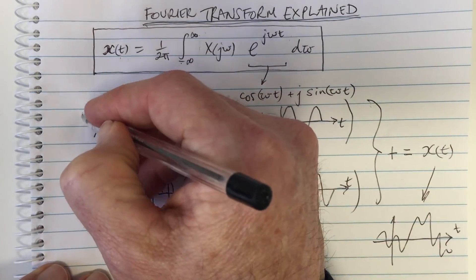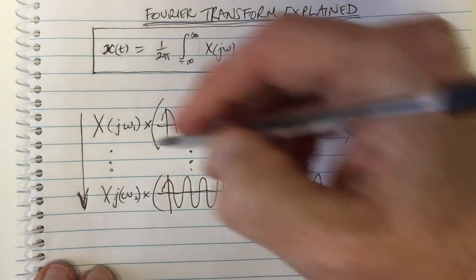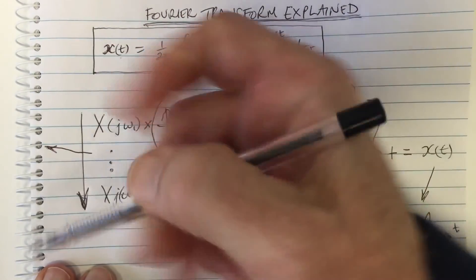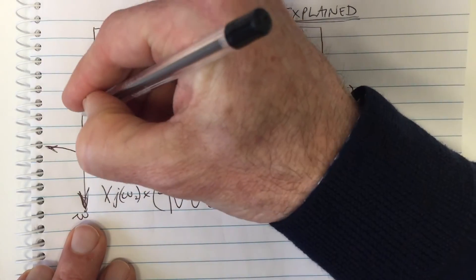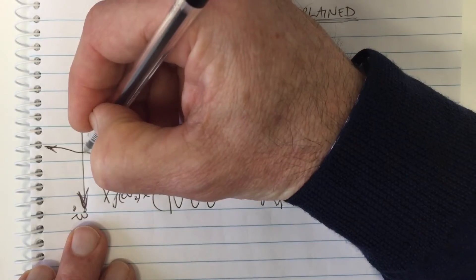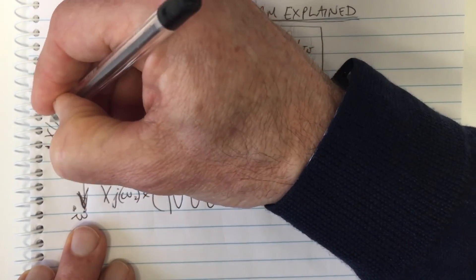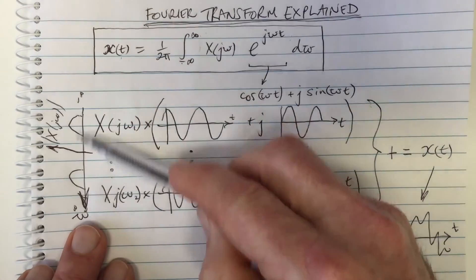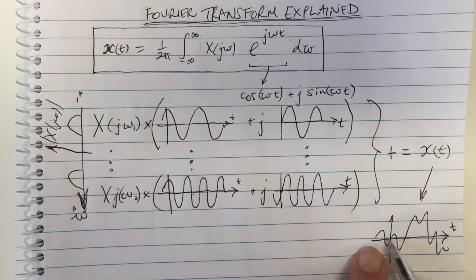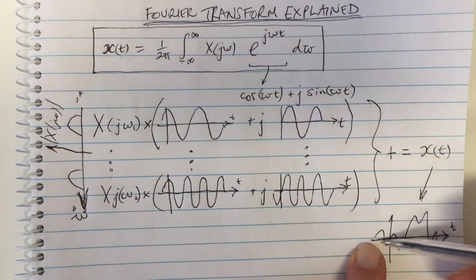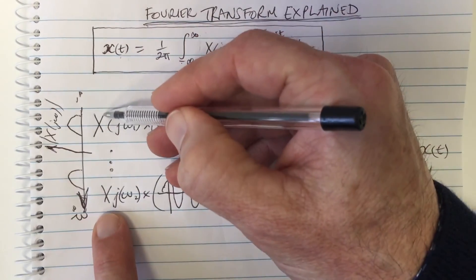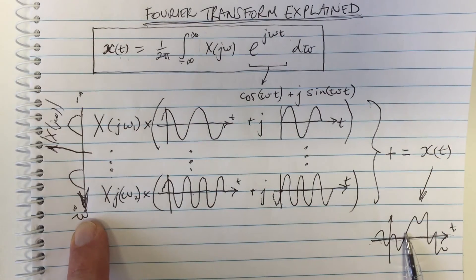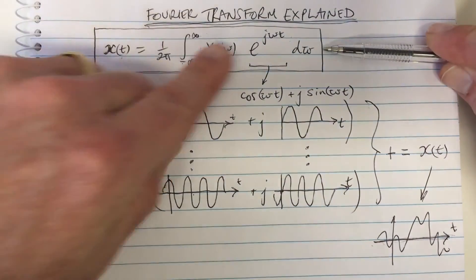Another thing to point out: if we go down in this direction and plot it on the side, where this axis is ω increasing from negative infinity to infinity, then in this direction we could plot the magnitude of X(jω) — that's the Fourier transform. So in the horizontal dimension you have the signal in the time domain, and in the vertical dimension you have the signal in the frequency domain. These are equivalent representations of the same signal, and this is a graphical way of understanding this equation and understanding why it's a transform.